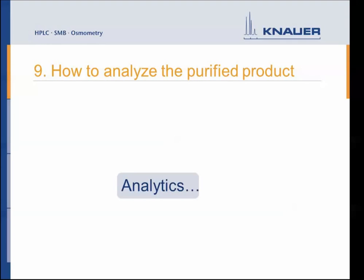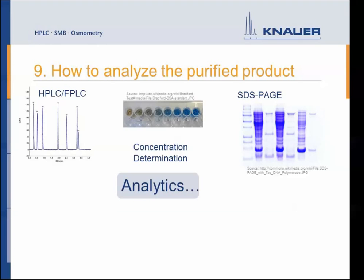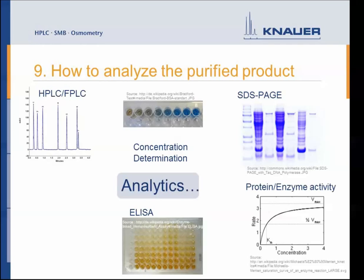Once you have successfully purified your protein, you analyze it for purity, concentration, and possibly activity and function. Classical methods include HPLC or FPLC for purity analysis, and determining protein concentration. SDS-PAGE is another classical method to analyze purity. Other options include activity assays to check if your protein is still active and functional, and mass spectrometry. These are just examples — of course there are many more methods available to analyze your purified product.